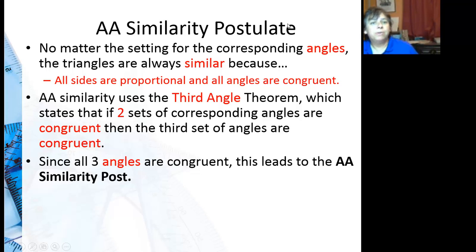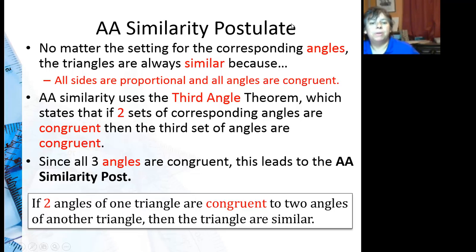And since all three angles are congruent, that means that the triangles are similar. So if two angles of one triangle are congruent to two angles of another triangle, then the triangles are similar.